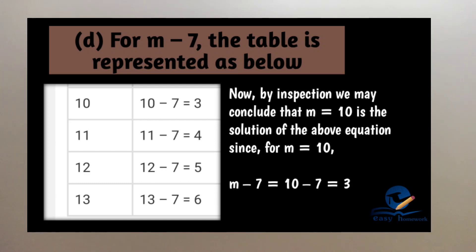So, M is equal to 10 is the solution of the above equation. Since M minus 7 is equal to 10 minus 7 is equal to 3.